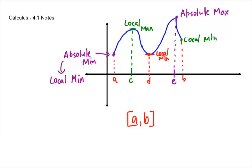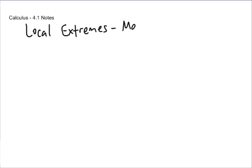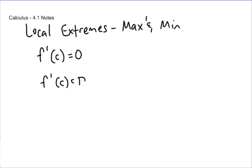So where does this lead? Local extreme values — your maxes and mins — occur where the derivative of your function equals zero, or where the derivative does not exist. These locations are called critical points. Really important things happen at these points.